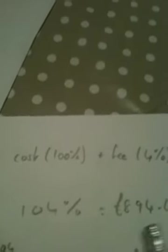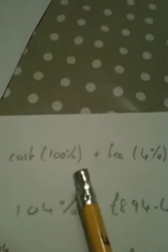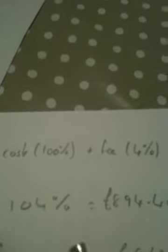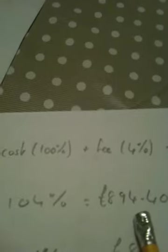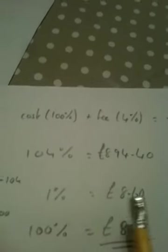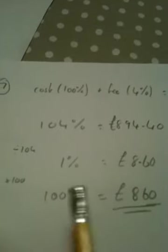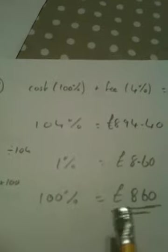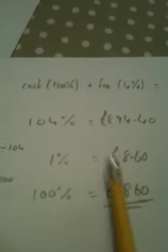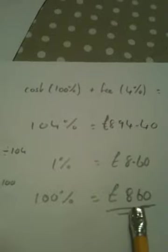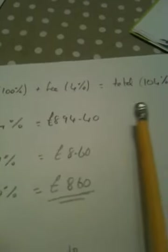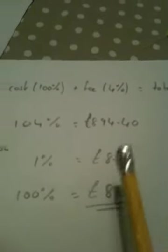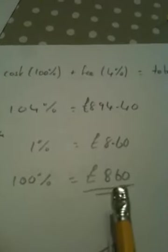That 104% comes to £894.40. I want to work out 100%, which would be the cost of the holiday on its own, not including the booking fee. If I know what 104% is, divide both sides by 104 to get 1%, multiply both sides by 100 to get 100%, which is the original cost. The 100%, the £860, add 4% of the £860 gives the total cost. We've got the cost of the holiday plus the booking fee. The cost of the holiday would have been £860.